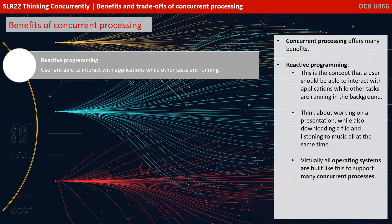Concurrent processing offers many benefits. Firstly, we have what's called reactive programming. This is the concept that a user should be able to interact with applications while other tasks are running in the background. Think about working on a presentation while at the same time downloading a file and maybe listening to some music on a streaming site. Virtually all operating systems are built like this to support many concurrent processes.